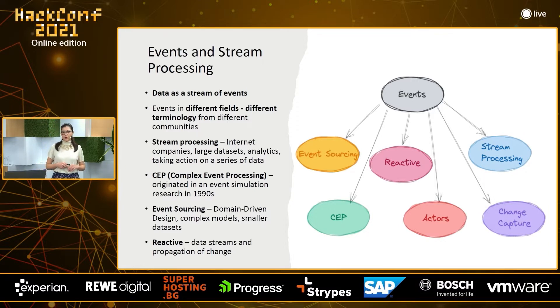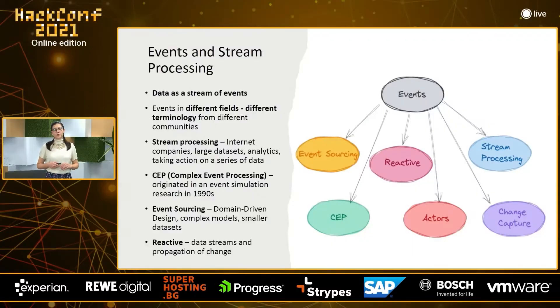Let's quickly check what we mean by reactive and how reactive actually makes use of events. The paradigm for reactive programming relies on the use of an asynchronous programming model to automatically update content that's otherwise static. It's mainly concerned with the use of data streams, structuring data as a stream, and the automatic propagation of change.